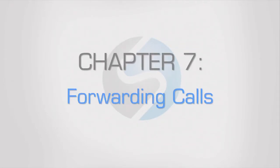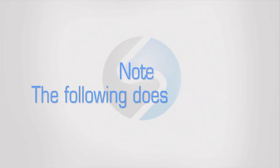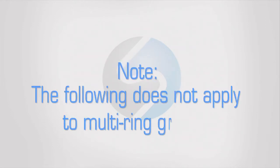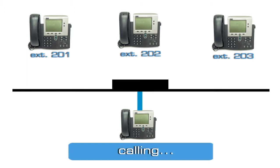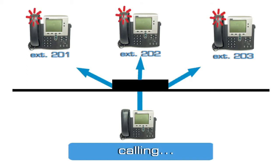Chapter 7: Forwarding Calls. Note: the following does not apply if you are part of a multi-ring group. A multi-ring group is a group of phones within a company that all simultaneously ring when an outside caller dials their department.